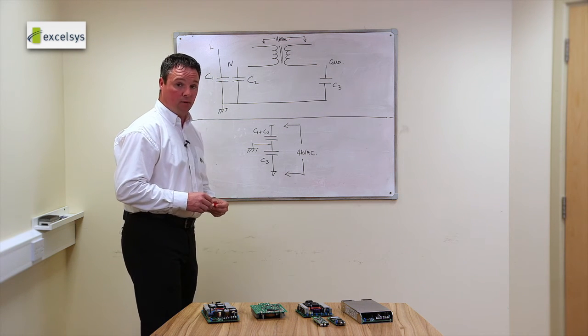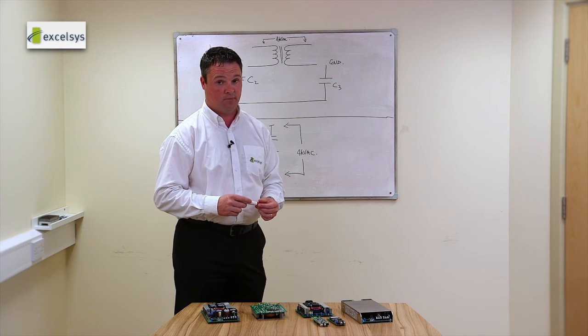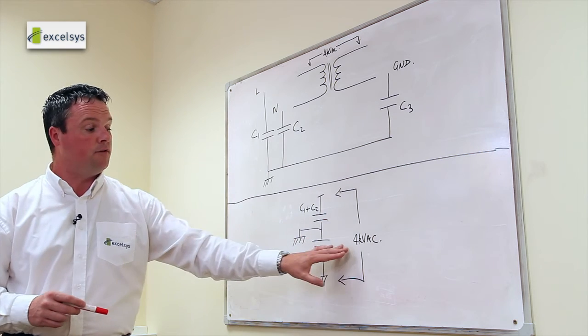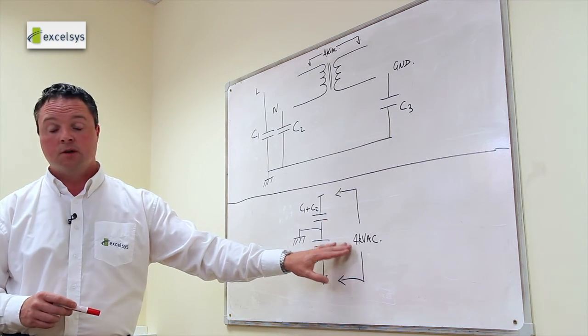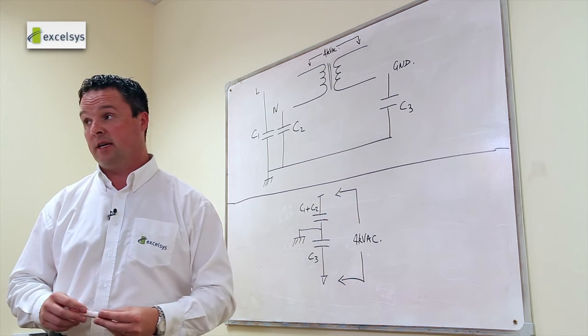And the third option, again which is permissible under sub clause 8.5.3, is that you can do a DC equivalent test of the 4kV AC. So it's root 2 times 4kV, which is approximately 5.6kV DC.